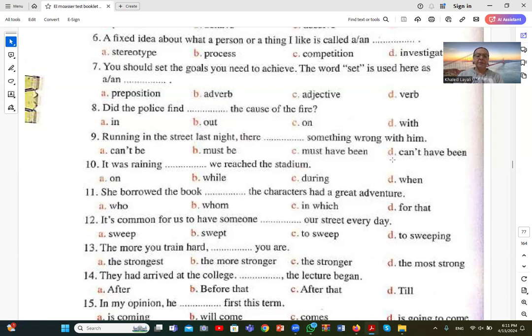Number twelve: It is common for us to have someone blank our street every day. Sweep. Have someone sweep our street. Number thirteen: The more you train hard blank you are. The stronger. The more you train, the stronger you are. This is a comparative structure. Both clauses use comparative forms. It can be -er with short adjectives, or more with long adjectives, or a combination.